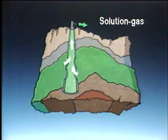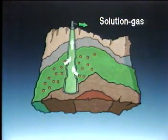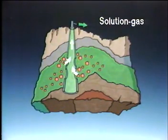Once the bubble point pressure is reached, the natural gas dissolved in the oil will come out of solution and form bubbles, which expand as the fluid pressure is reduced further.